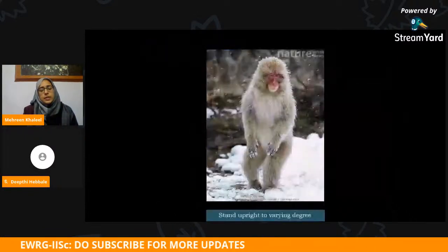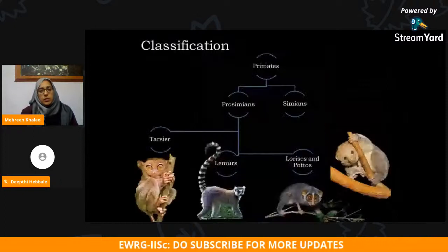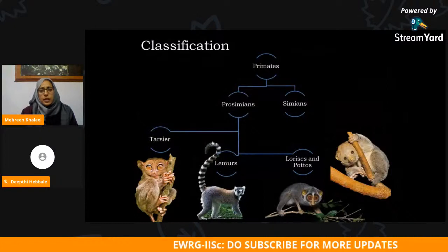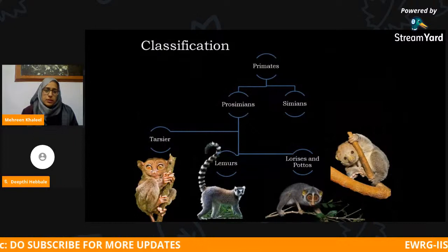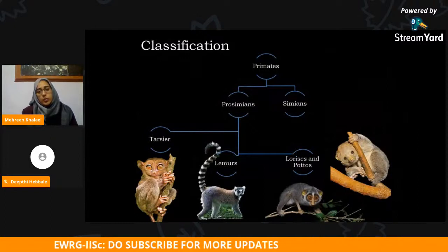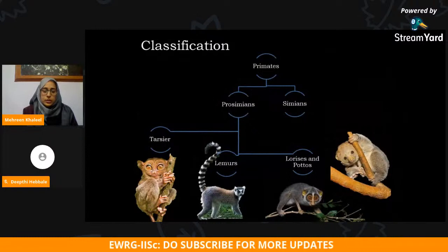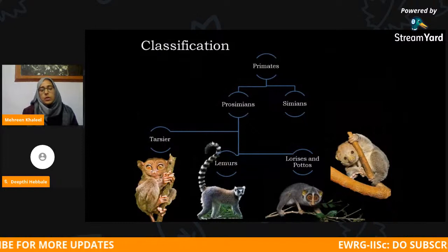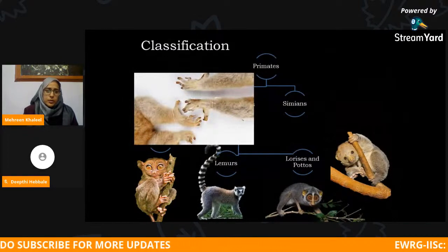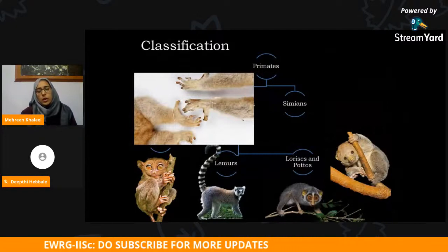Primates can stand upright to a varying degree. Taxonomists have classified them in two major groups: prosimians and simians. Primates are as old as 50 to 85 million years, and the oldest are the prosimians. Lorises, lemurs, and tarsiers form this group of prosimians. Interestingly, they are nocturnal, have very large eyes, are mostly insectivorous, and they have a grooming claw or toilet claw — one of their digits has a claw — which is an important characteristic of prosimians.